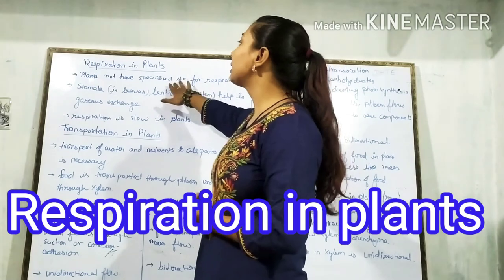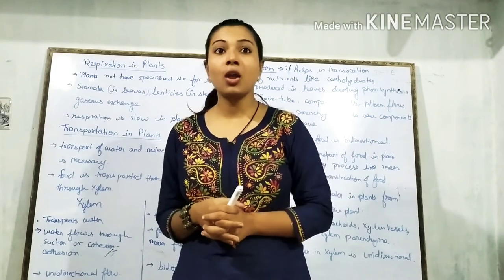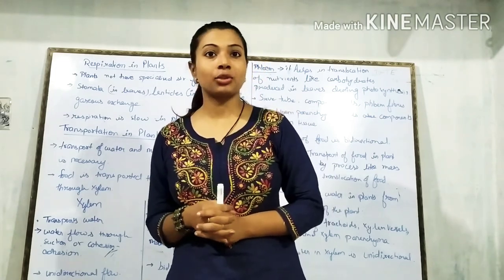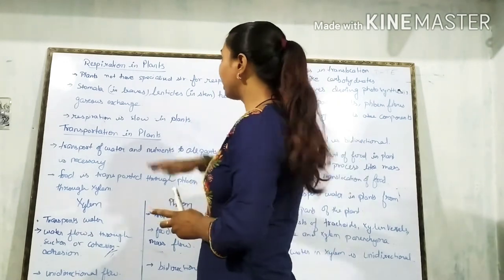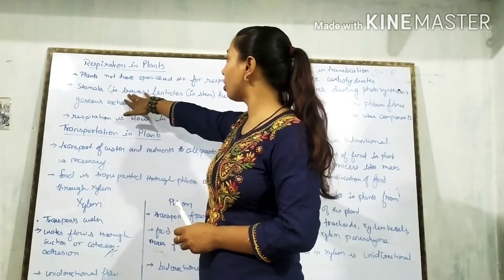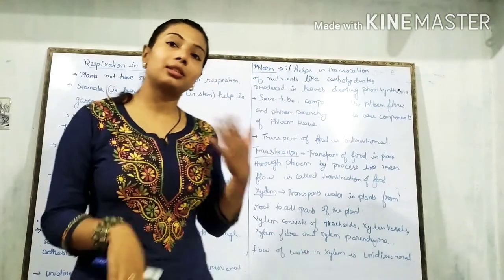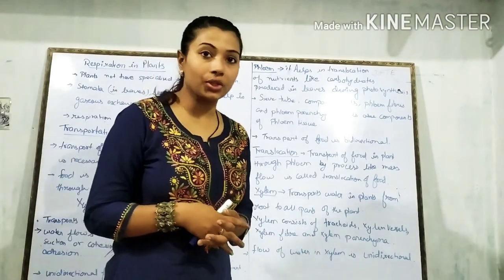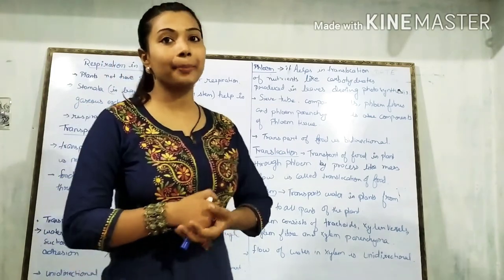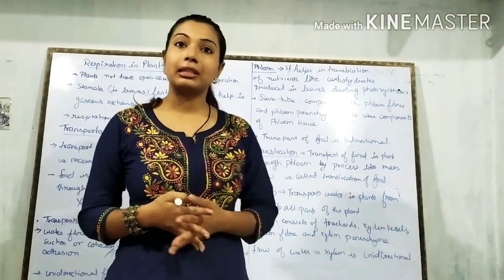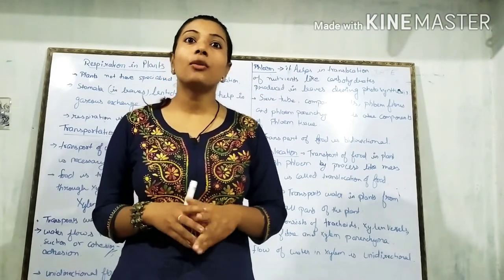In plants, there is no specialised structure for respiration. Gaseous exchange happens through stomata in leaves, lenticels in stems — oxygen goes inside and carbon dioxide is released. The respiration rate in plants is very slow as compared to animals.